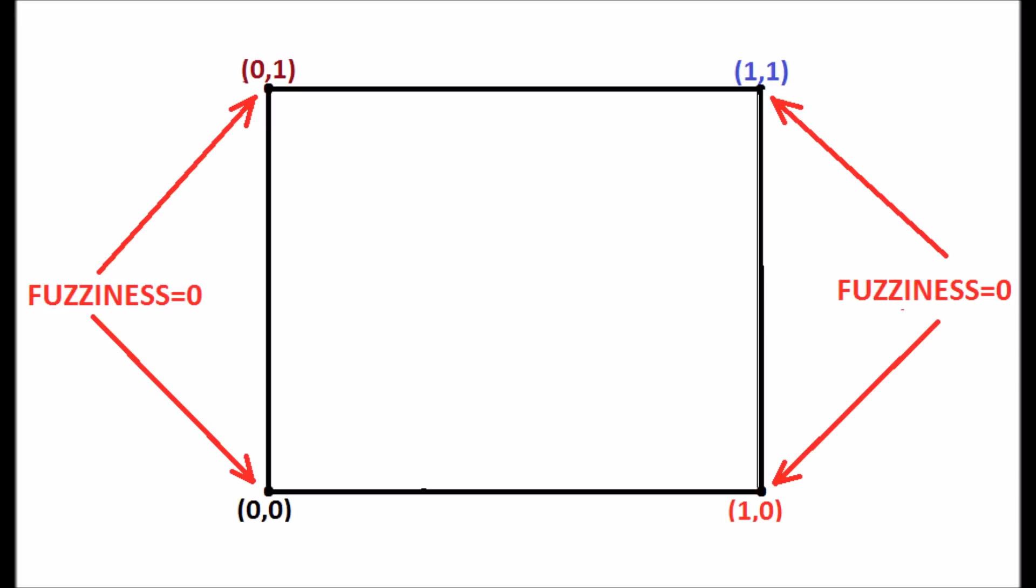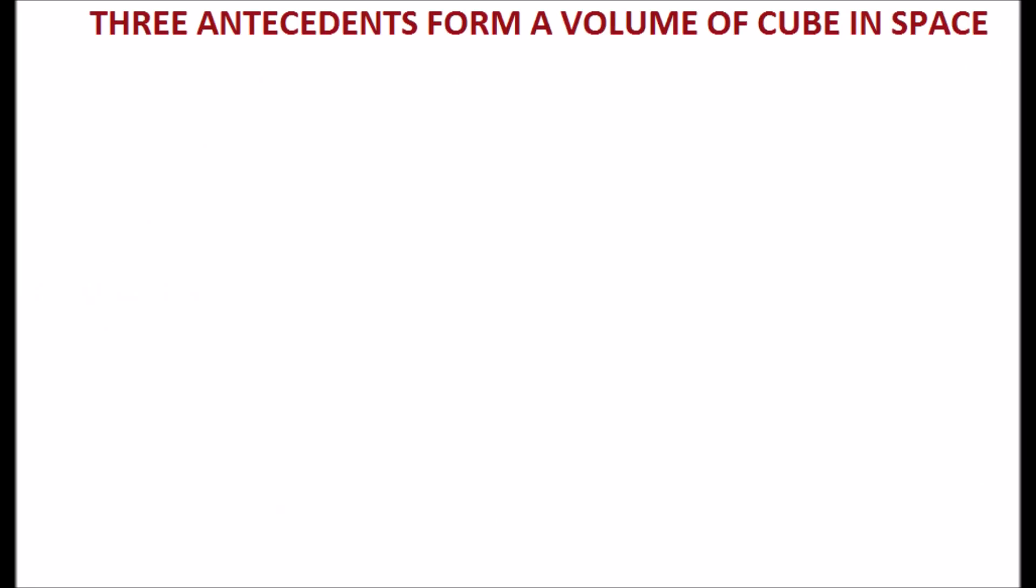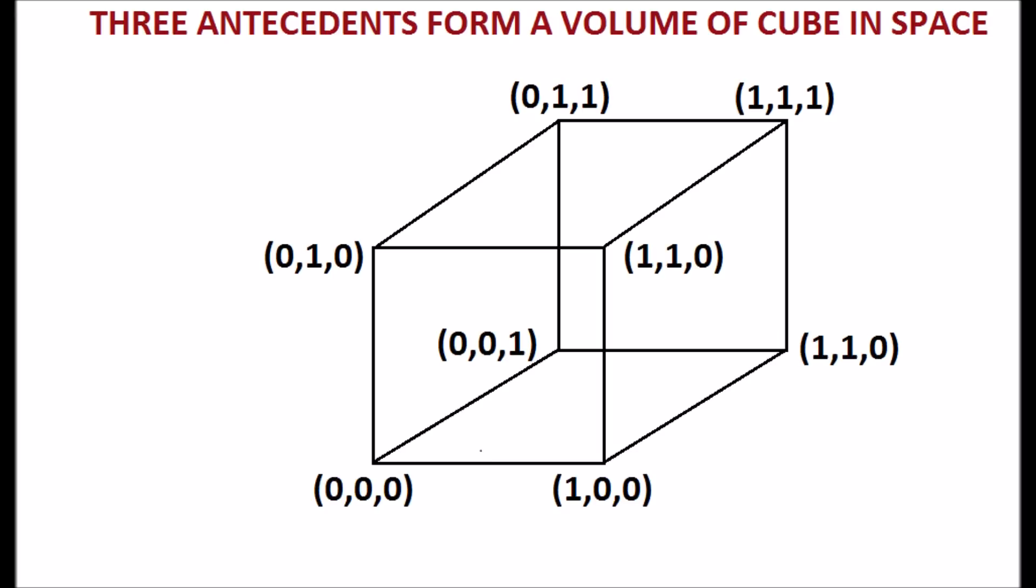Rama and Krishna, two antecedents considered, instead we considered three antecedents. Instead of unit square, it forms a unit cube, as shown in the display. The eight corners of the unit cube, the fuzziness is 0, because certainty is there.